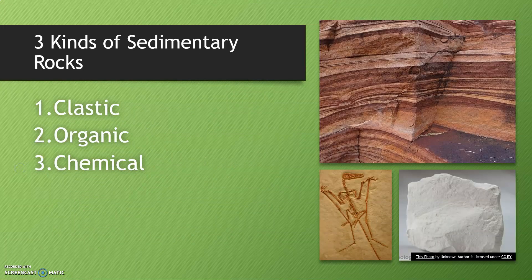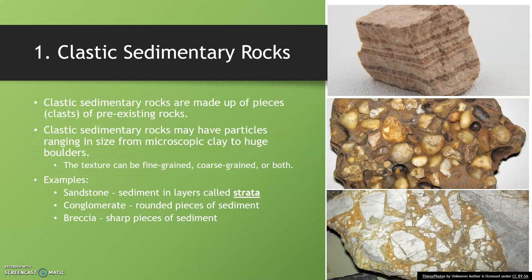There are three kinds of sedimentary rocks, and these are vocabulary words you'll need to know. The first type is the clastic sedimentary rock. Clastic sedimentary rocks are made up of pieces of pre-existing rocks, sometimes known as clasts. They may have particles ranging in size from microscopic clay to huge boulders, and the texture can be fine-grained, coarse-grained, or a combination of both.